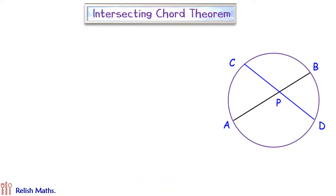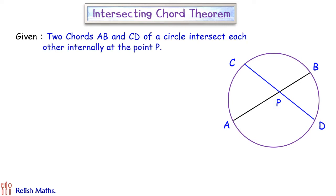Let's check the proof. Given: In a circle, two chords AB and CD are intersecting each other at point P inside the circle. To prove: the product of PA into PB is equal to PC into PD.